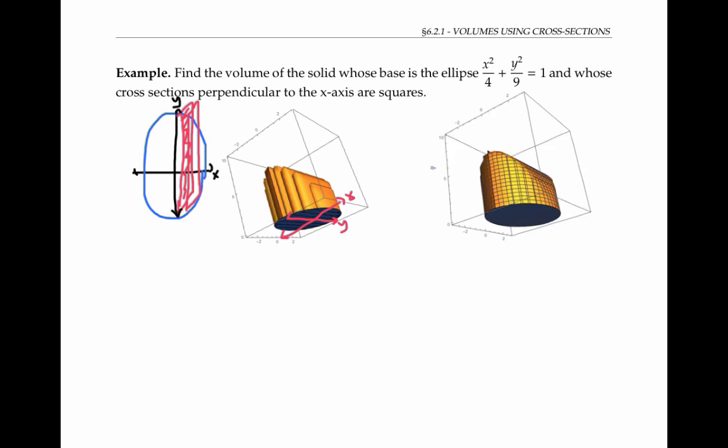A better picture of the solid is this one. Here, the slices are infinitely thin, but they're still square shaped and they're still oriented in such a way that they're perpendicular to the x-axis.